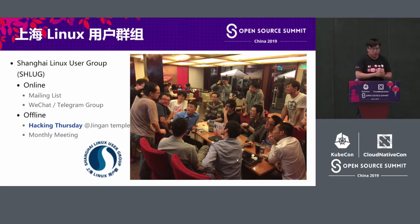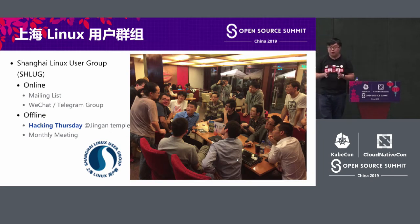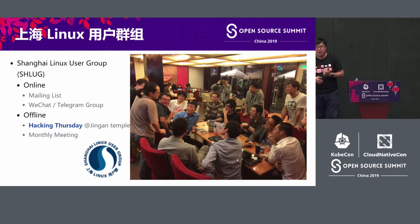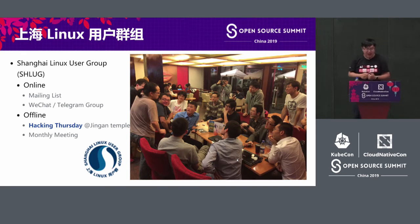This is a photo I have taken in the Linux user group. First, there is a mailing list. You may think the mailing list is easy, but for Chinese open source the mailing list is not effective, because for mainland people they do not use a mailing list — they use a WeChat group or Telegram group. If they use Telegram, there are more entry barriers, so it is not that easy for you to get involved.